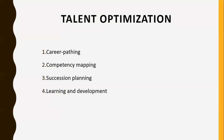Next is competency mapping. Identify what his skill sets are and what his weaknesses are. Give opportunities for growth based on his skill set and strengths. Where he is weak, train him in such a way that over a period of time, the weakness converts into a skill. That's what we have to do in competency mapping.